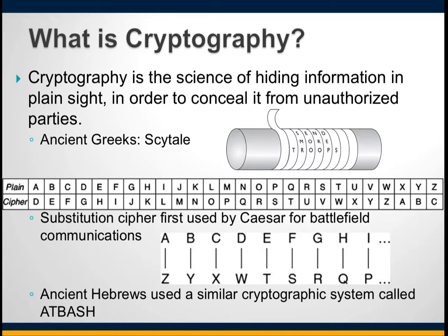Encryption is not a new concept — it dates back through the ages. As long as there have been people, there have been secrets. One early system used by the ancient Greeks and Spartans is called the scytale (S-C-Y-T-A-L-E), which functioned by wrapping a strip of papyrus around a rod of fixed diameter on which a message was written. Julius Caesar also encrypted messages, using what's known as a substitution cipher.